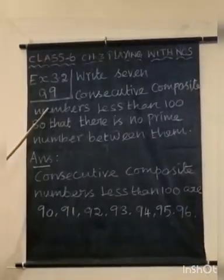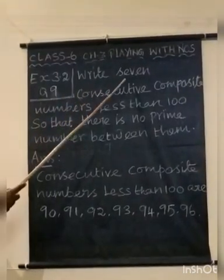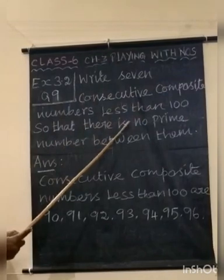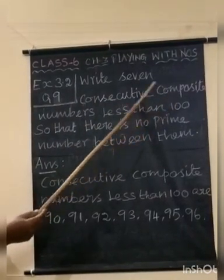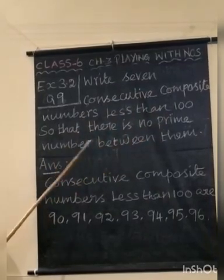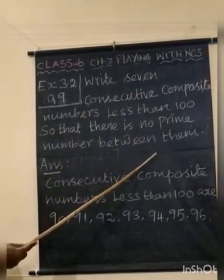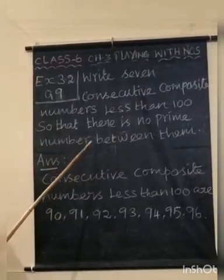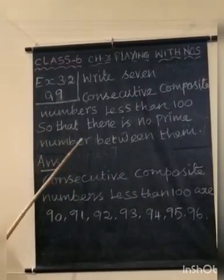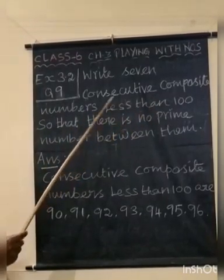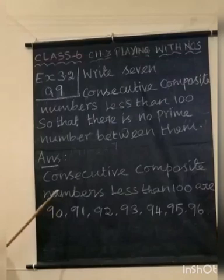Question number 9: Write 7 consecutive composite numbers less than 100, so that there is no prime number between them.